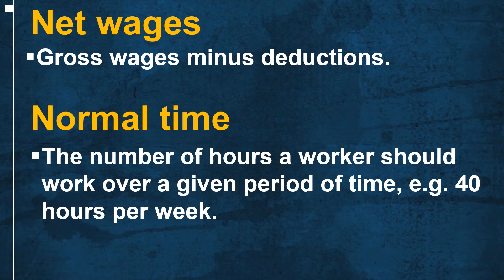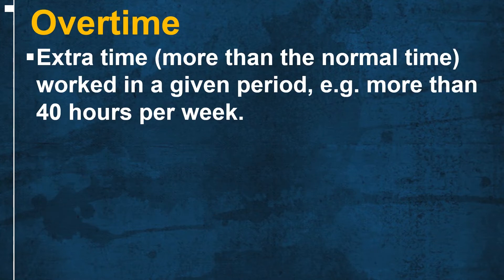When we talk about normal time, we are referring to the number of hours a worker should work over a given period of time — for example, 40 hours per week — while overtime is extra time, which is basically more than the normal time worked in a given period, for example, more than 40 hours per week.